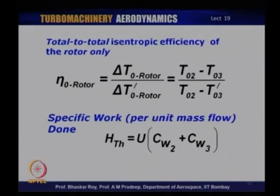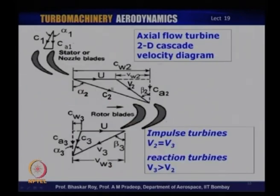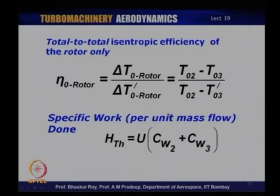It is also possible to define a rotor efficiency — essentially work done by the rotor in terms of temperature compared to the isentropic temperature change. At the end of the day, the work done by the turbine is captured by Euler's equation: u times (Cw2 plus Cw3). In the case of the turbine, Cw2 and Cw3 are on opposite sides of the axial direction, so they add up. So that is the basic mechanism by which axial flow turbines work.